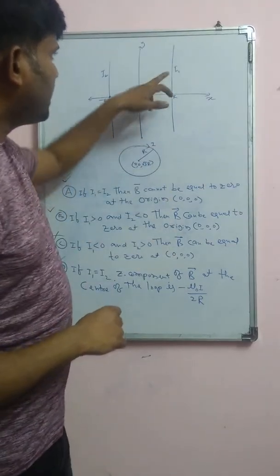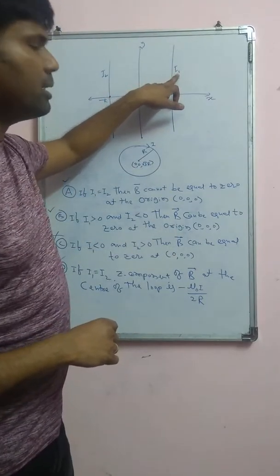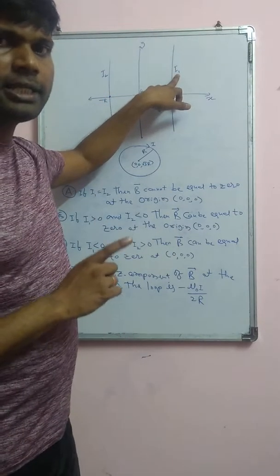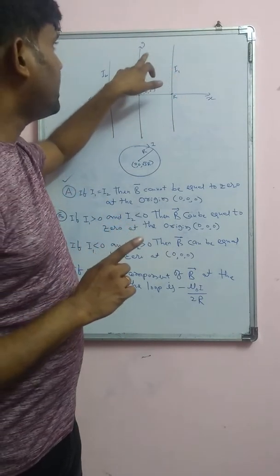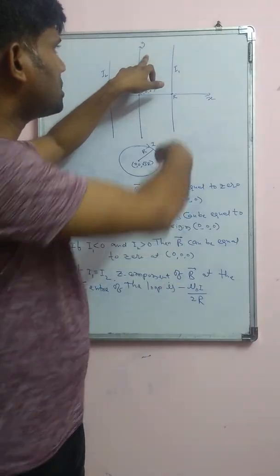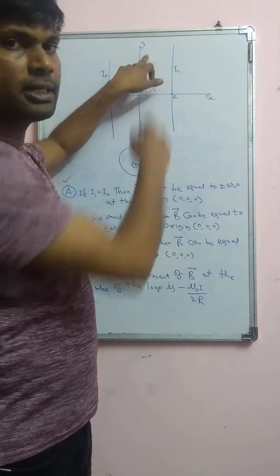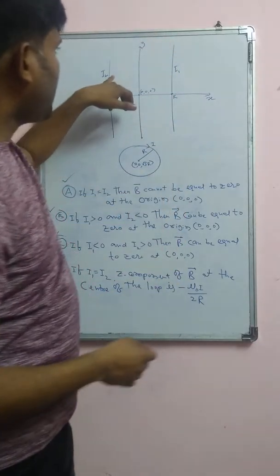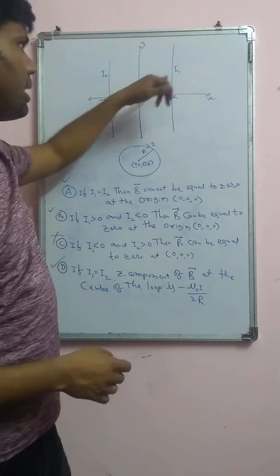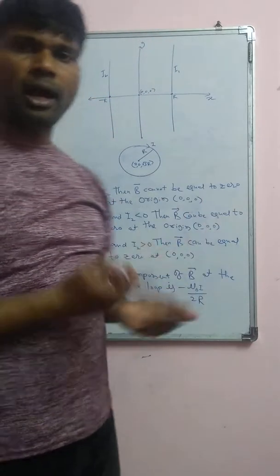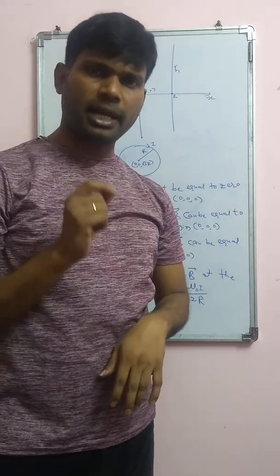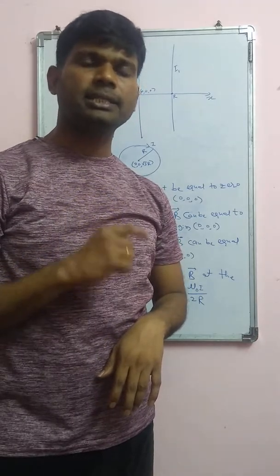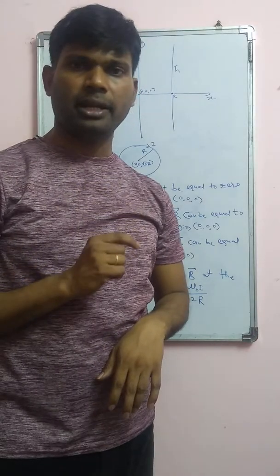One more thing: if i1 is positive, the current is along the positive y direction. If i2 or i1 is negative, the direction of the current is along the negative y direction.